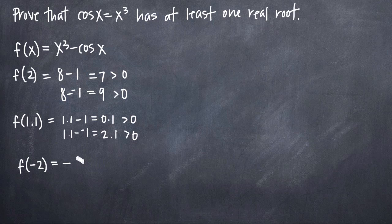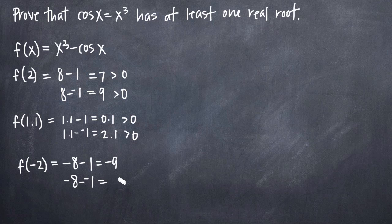If we take f of negative 2, we'll get negative 8. And again here for cosine, we don't know the value of cosine of negative 2, but we know that at best it can be positive 1. And here we end up with negative 9. Or we'll have negative 8 on the other end minus a negative 1, which at best will be negative 7, both of which are less than 0 and negative.